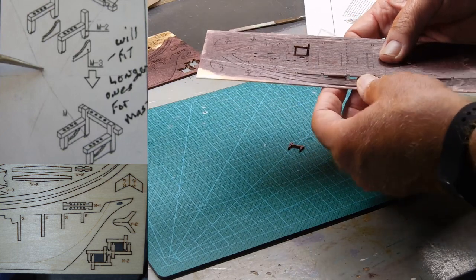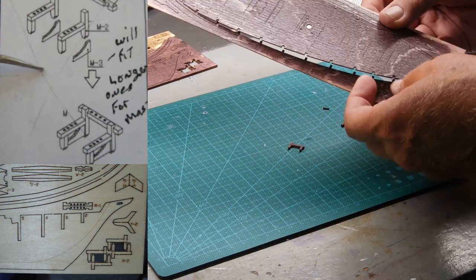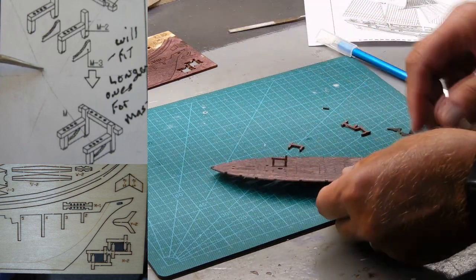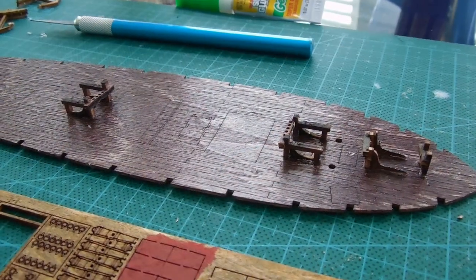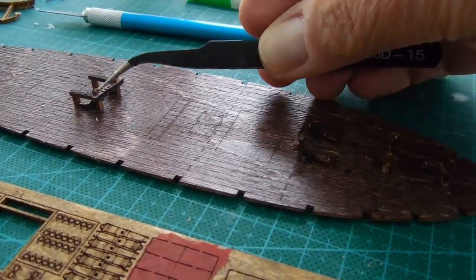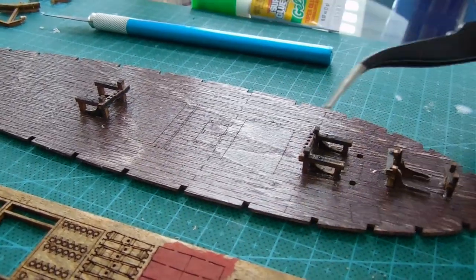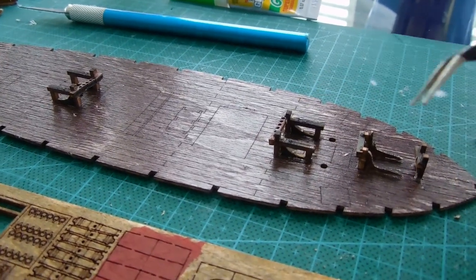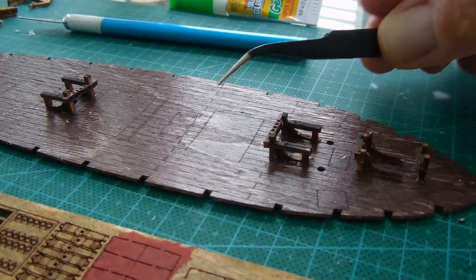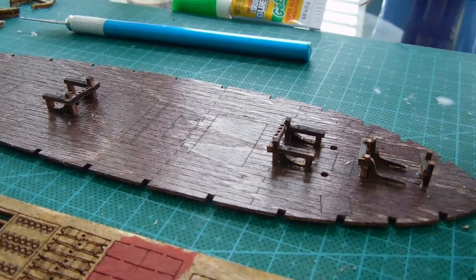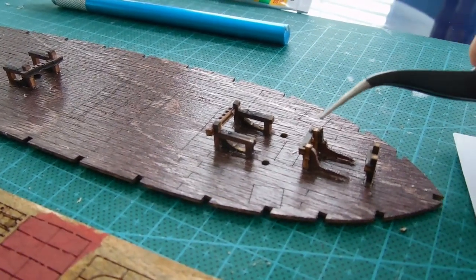So I'm going to glue each one of these in place. Once I get the parts that are holes in the hull attached, and I use super glue, then I put the rest of the parts together separately. I do not mount them on the ship till later.